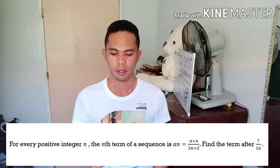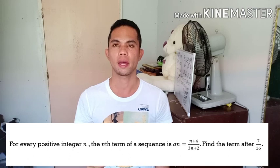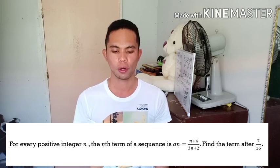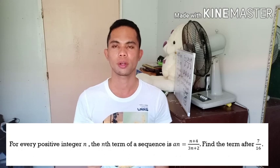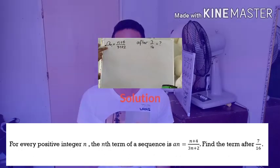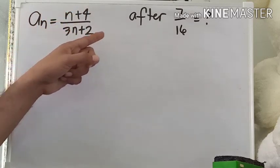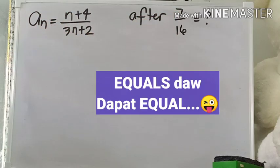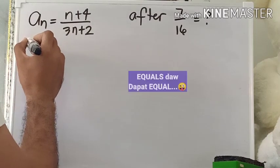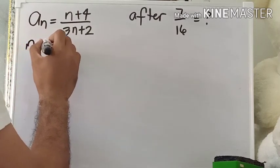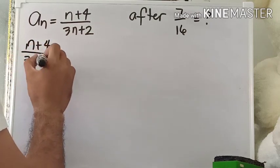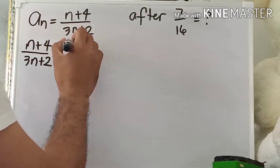For our first problem: for every positive integer n, the nth term of the sequence is a sub n equals (n + 4) over (3n + 2). Find the term after 7 over 16. What we are going to do first is solve for the value of n that will make (n + 4) over (3n + 2) equal to 7 over 16, creating the equation (n + 4)/(3n + 2) = 7/16.